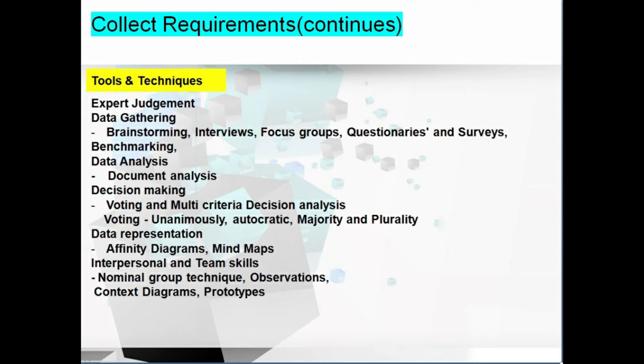Questionnaires and surveys are typically used for larger groups to draw out requirements from respondents. Benchmarking focuses on measuring organizational performance against other organizations in the same industry — comparing performance between companies. This tool is very costly and time-consuming.